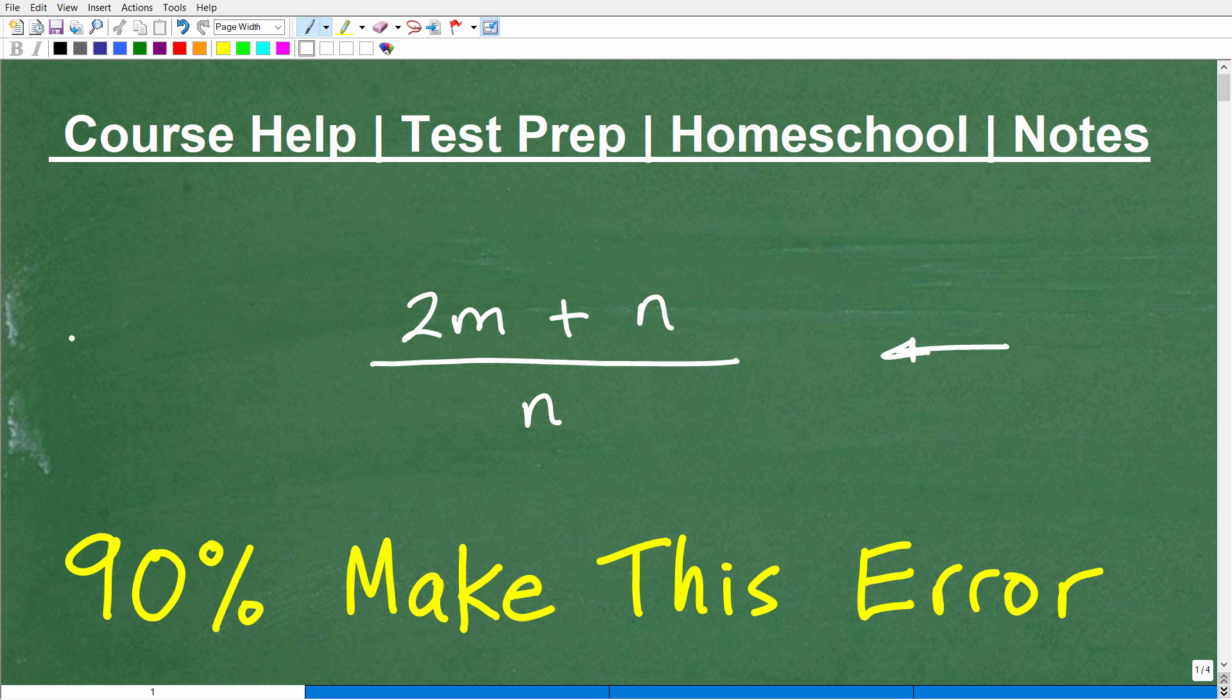Okay, so for example, if I had 10 over 30, you could reduce that down to 1 third. I'd like you to go ahead and simplify this, but be careful because probably 90% of you are going to make this error or have made this error, and hopefully you stop making this error. We're going to get into what this error is in a second. I'm not going to give you too many hints because I want you to think about this particular problem.